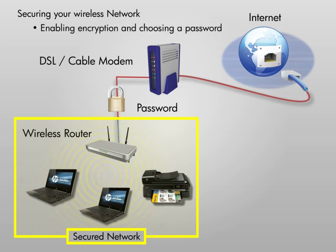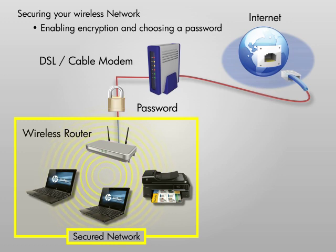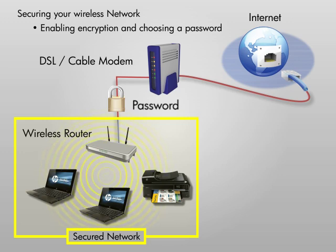The best way to secure your wireless network is to use encryption and a wireless password. When you enable encryption, all your network's wireless communication is scrambled or encrypted, so that the data cannot be read by anyone not connected to your network. Encryption also requires you to select a password. A device cannot connect to your network without knowing the password. Be sure to remember your network password, because you will need it, along with the network name, to connect devices to your network.